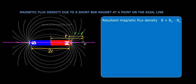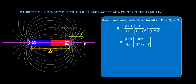B equals μ₀m/4π × [1/(r-l)² - 1/(r+l)²]. This equals μ₀m/4π × 4rl/(r²-l²)², which simplifies to μ₀/4π × m(2l) × 2r/(r²-l²)².